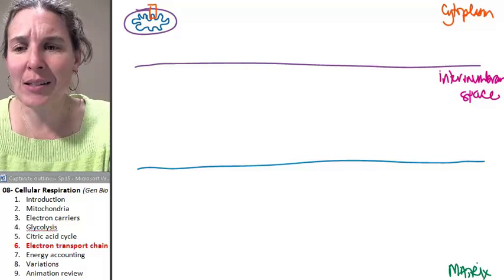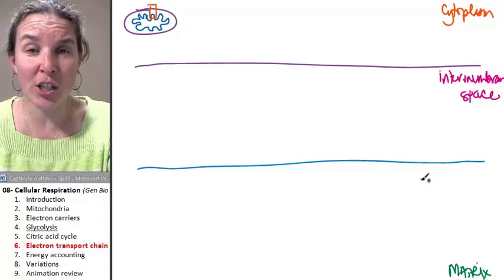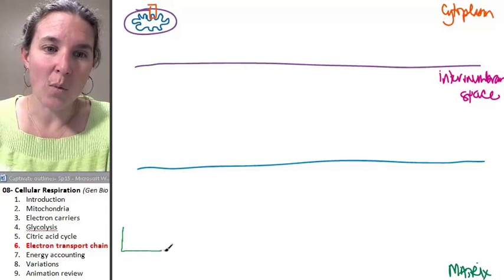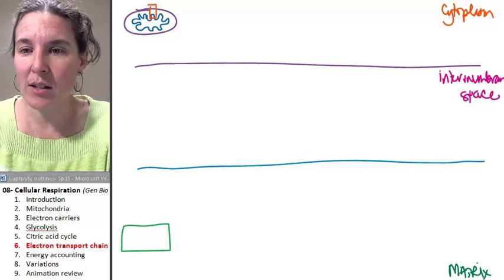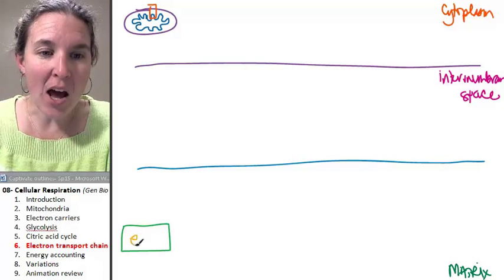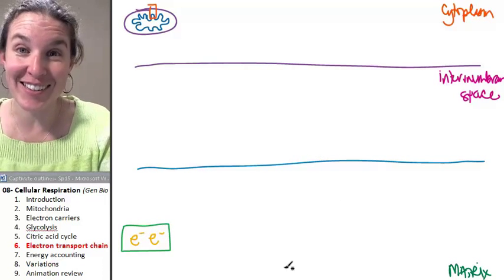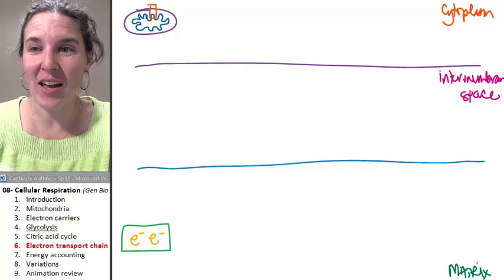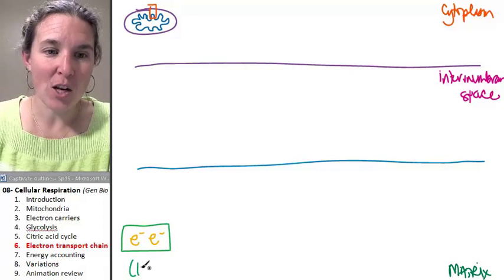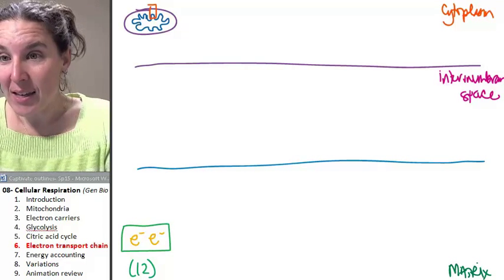Who is coming to this electron transport chain? Well, our electron carriers. And what do they have? There were 12 of them. And every single one of them is carrying two electrons. So watch. And there are 12 of them. 12 of them coming to do a job.